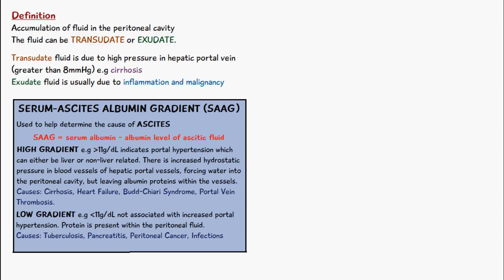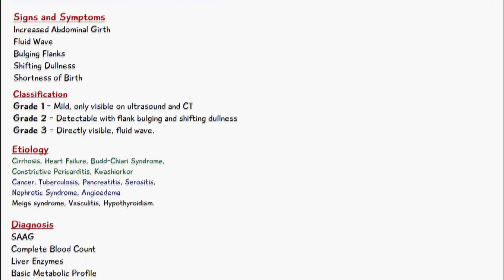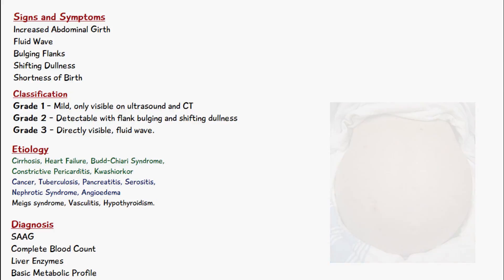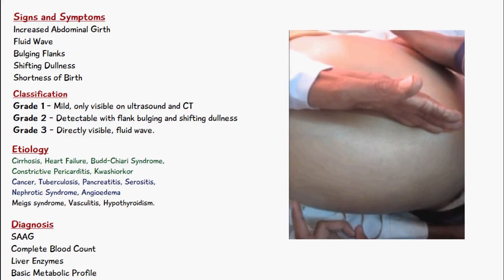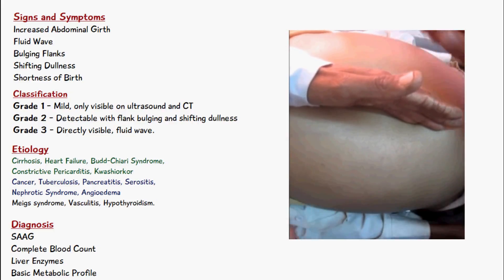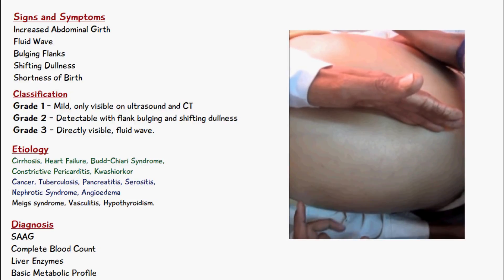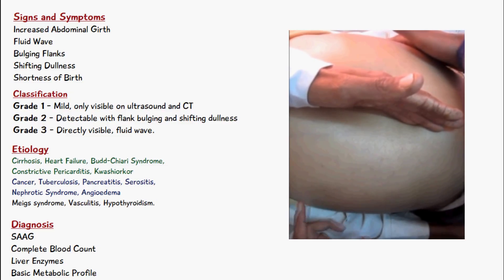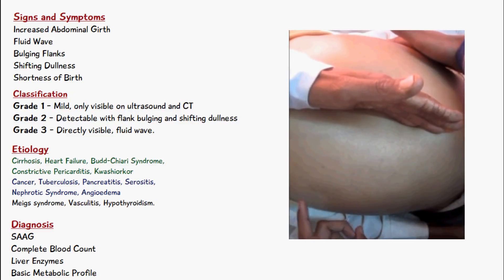Now let's talk about the signs and symptoms of ascites. As seen in this diagram, the patient has increased abdominal girth because the accumulation of fluid pushes the abdomen outward, making it appear much bigger. There is also a test known as the fluid wave test: you place the patient's hand in the middle of their abdomen and tap from one side. The hand in the middle stops vibrations from soft tissue, but in ascites the vibrations are carried through the fluid, so tapping one side is felt on the other — that is a sign of ascites.